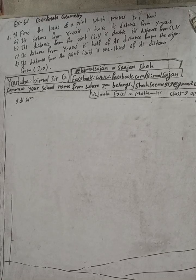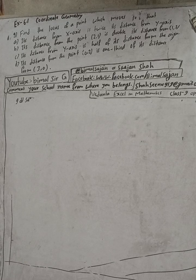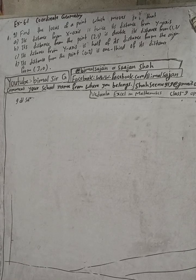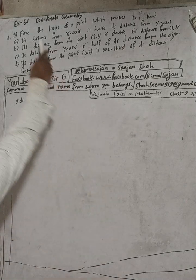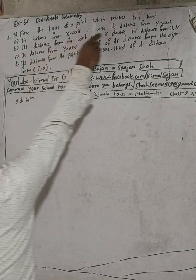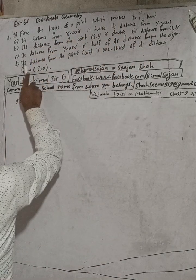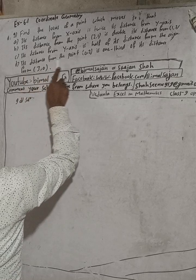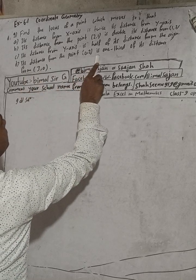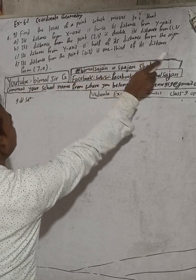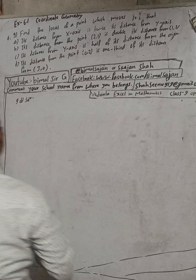Hi class 9 and 10 students, welcome back to Vimalsarji YouTube channel. This is question number 9D, exercise 6.1, coordinate geometry, Vedant optional mathematics class 9. The question is: find the locus of a point which moves so that its distance from the point (0, 2) is one third of its distance from (3, 0).